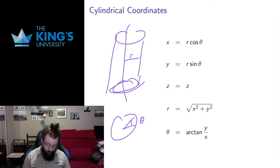And so then we know which cylinder we're on and what radius we have. The only other thing we need to know is how far up we are, so we add a height variable which is z. And this is exactly the same as the Cartesian z.